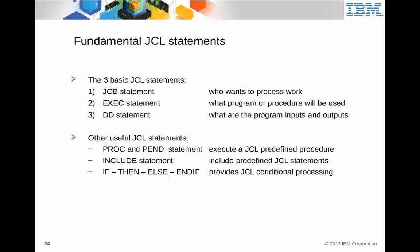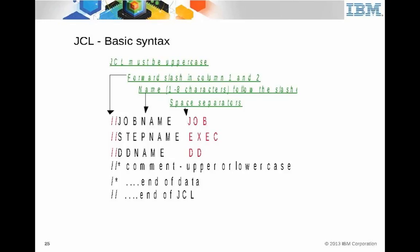For JCL basic syntax: the job name is chosen by the programmer, the reserved word JOB is in there, EXEC can have a step name chosen by whoever writes it, and DD with the DD name is sometimes determined by the program. Slash-slash-asterisk is a comment statement in JCL. Slash-asterisk is considered end of data. Slash-slash with nothing after it is considered end of JCL, though this very rarely gets used.